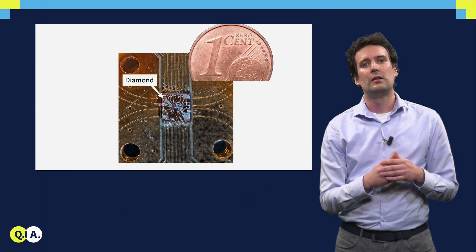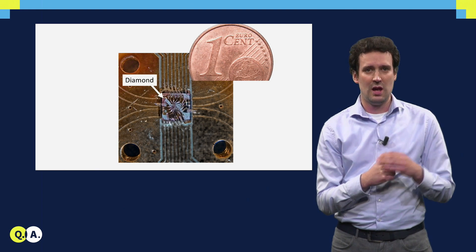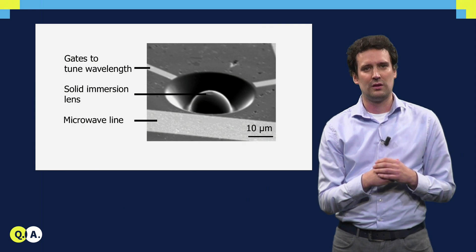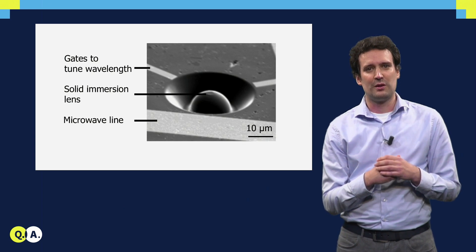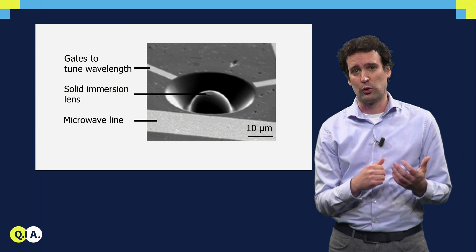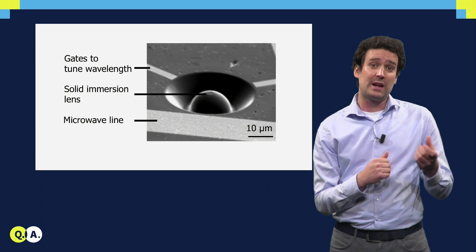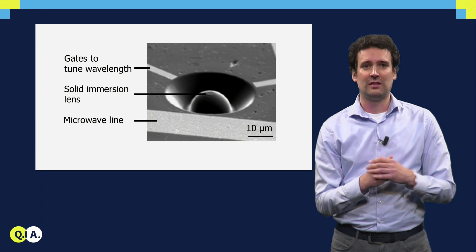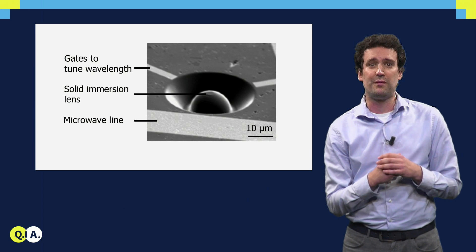And if we zoom in, you see here the diamond, it is just a few millimeters big, and if we zoom in even further, with an electron microscope, you can see these structures. So the gray background here is the surface of the diamond. The electrodes are used to apply electric fields that control the emission wavelengths of the NV center, the color that it emits. And the microwave line is used to apply microwave fields that control the spin state. The half sphere is a lens that has been sculptured out of the diamond, and we do this to get the photons effectively out of the diamond.